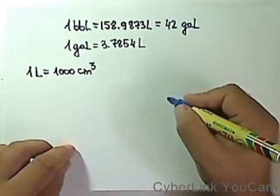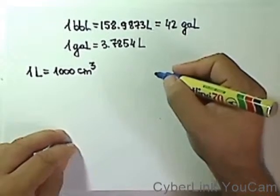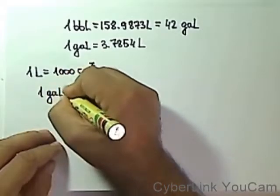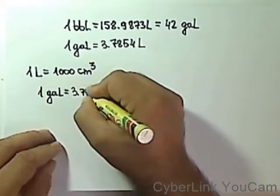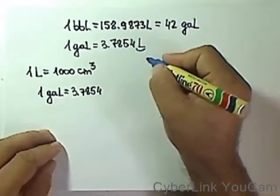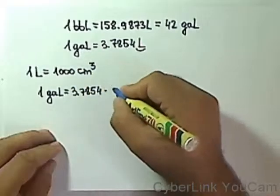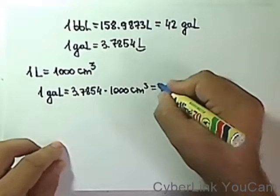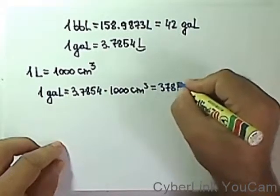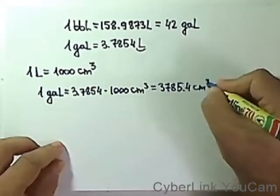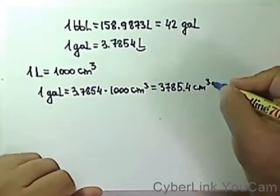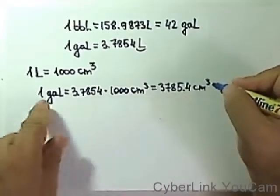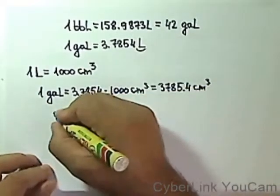But in one liter there are 1,000 cubic centimeters. Multiply by 1,000 cubic centimeters, and what do we get? 3,785.4 cubic centimeters in one gallon.